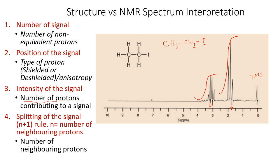And finally, the splitting of the signal. Each signal can be split. The reason it splits is due to the number of neighboring protons — the splitting is because of the neighboring protons. The splitting pattern rule is the n+1 rule.